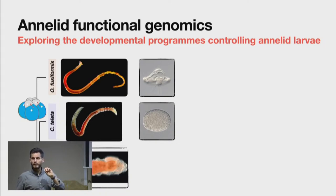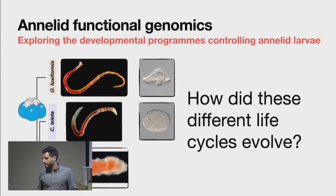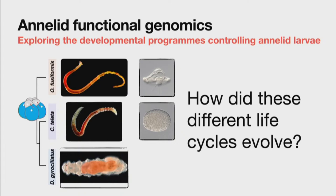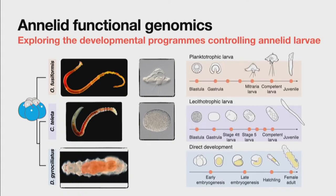This is a perfect system to understand how different life cycles evolve — why you have similar starting and end points but completely different life cycles. The first thing we did was characterize the life cycles. We know them well from developmental biology work. We then decided to ask: how are genes actually controlling this? Let's identify the genetic changes driving these different life cycles. We collected samples at different time points and started doing comparative functional genomics.